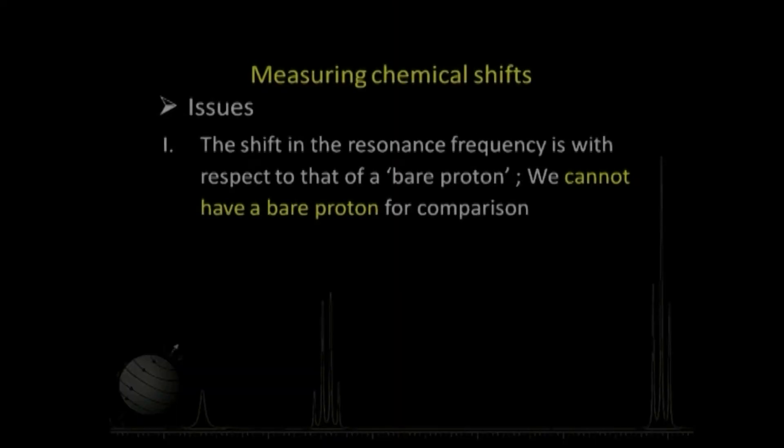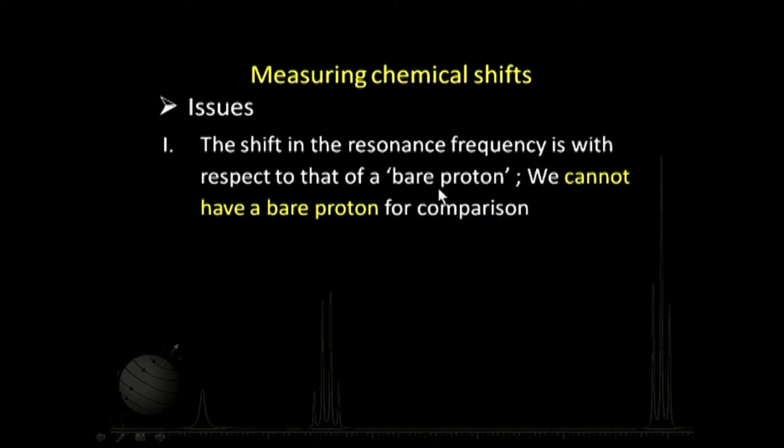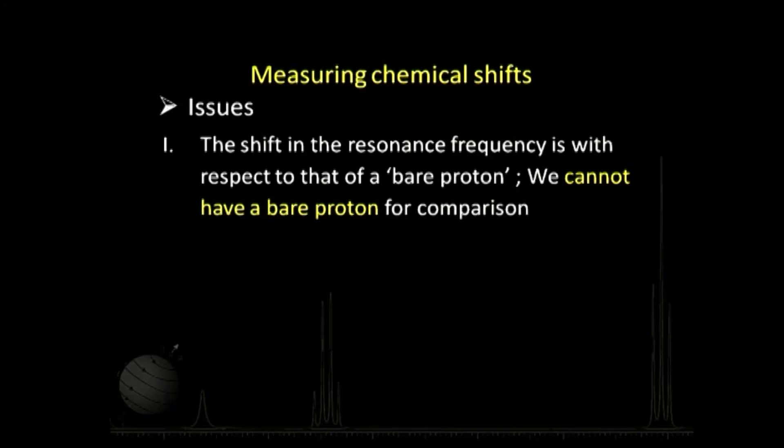In order to do that, in all the spectroscopy we've done earlier, the x-axis is some measure of energy — it could be frequency, wavelength, or wave number. But in case of NMR we cannot do that because of certain issues. Firstly, the shift in resonant frequency is with respect to that of a bare proton, but we cannot have a bare proton for comparison. So we cannot directly quantify the chemical shift.